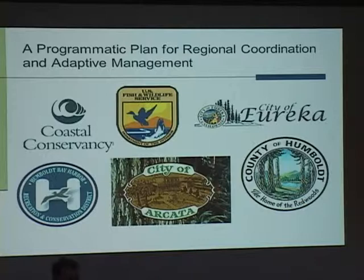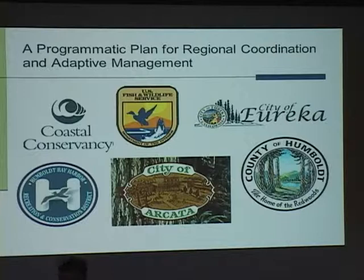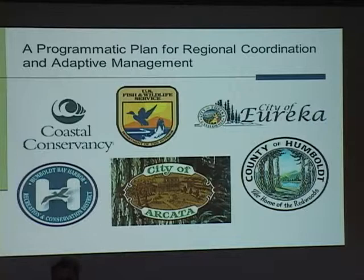First, there's uncertainty regarding the rate and timing of funding that will become available to control Spartina. There's also some remaining question about the effectiveness and cost of different control methods, though we're gaining information daily. Finally, Spartina is distributed across all different ownerships — different public and private owners — and there are many different entities that will continue to be involved in Spartina control: the Fish and Wildlife Service, the Coastal Conservancy, Arcata, Eureka, the county, and private landowners.